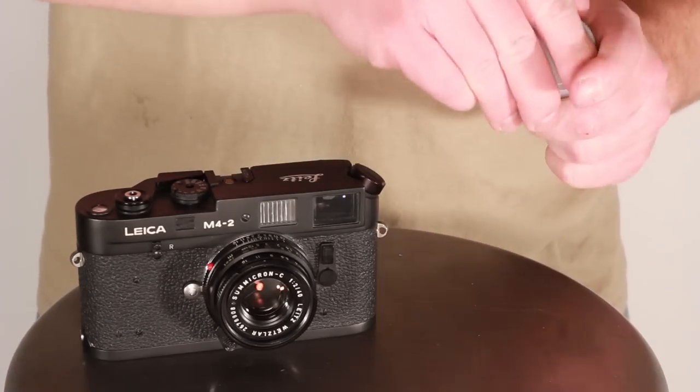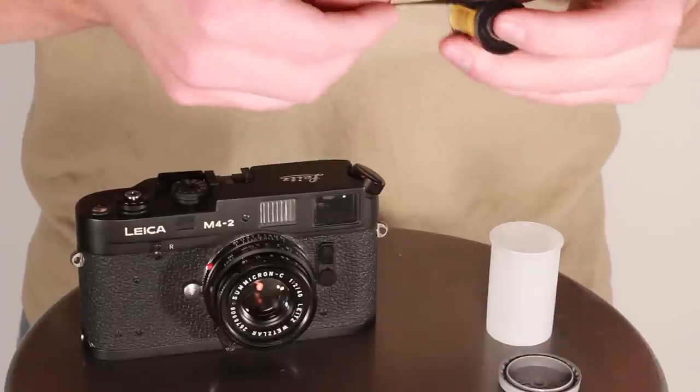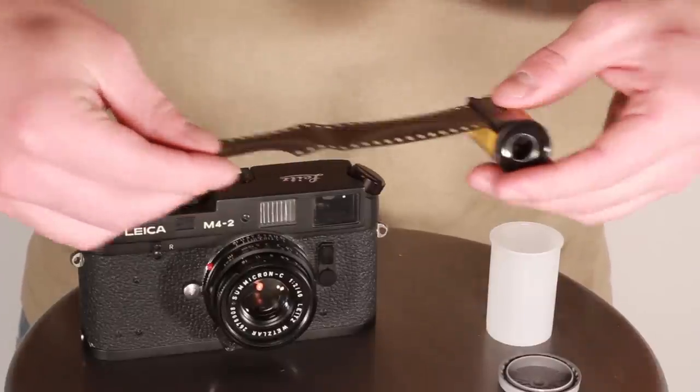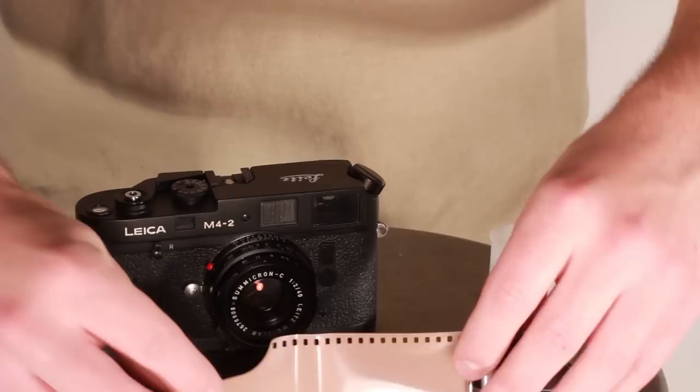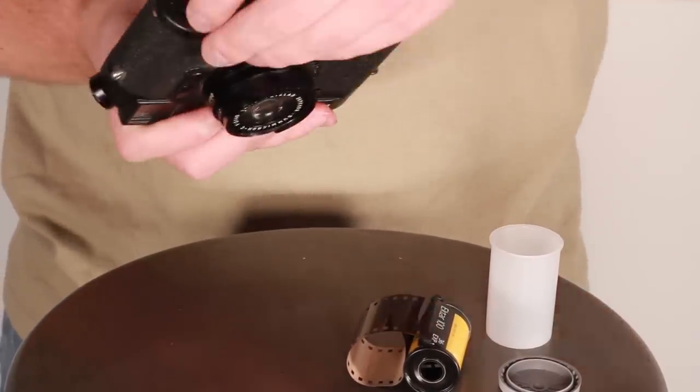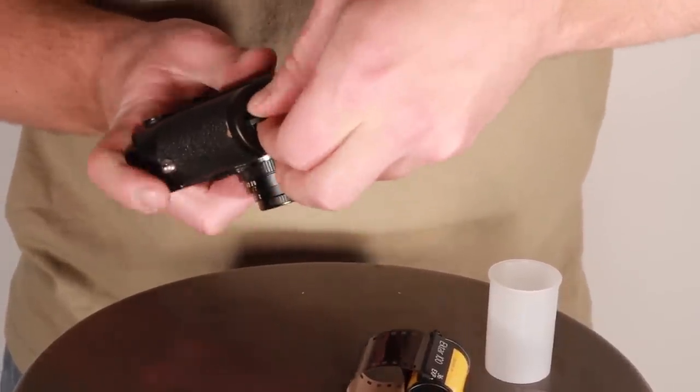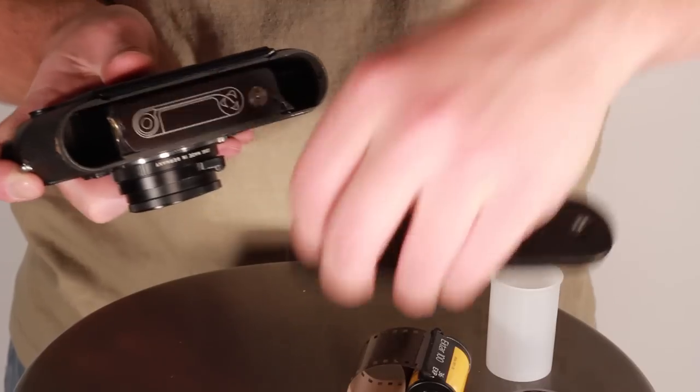First thing we're going to do is take our film out of the canister and pull out the lead so that we have enough film to properly get it aligned, roughly the length of the body. Go ahead and set that down, flip the camera over, and open the latch on the end here, twisting 180 degrees and pulling straight up and away from the body.